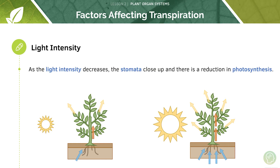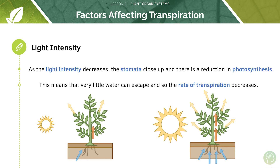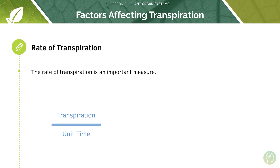As light intensity decreases, the stomata close up and there is a reduction in photosynthesis, meaning very little water can escape, so the rate of transpiration decreases. The rate of transpiration describes the amount of transpiration per unit time — you calculate it as the raw amount of transpiration that occurs divided by the unit time.